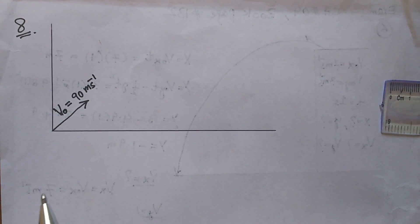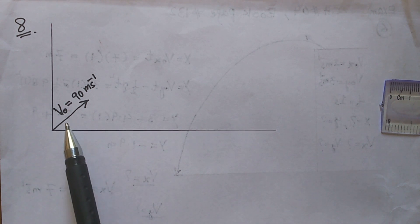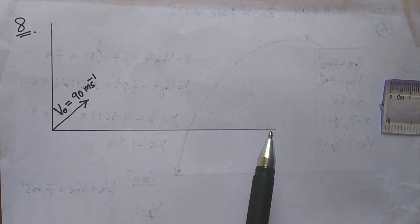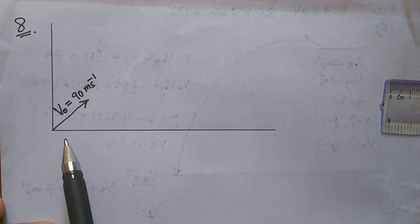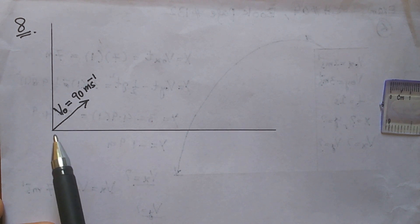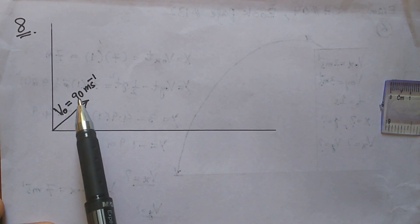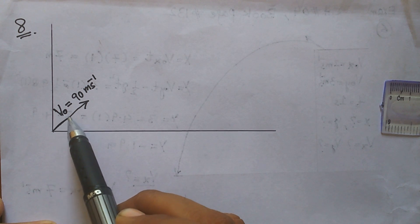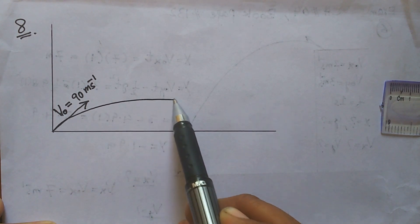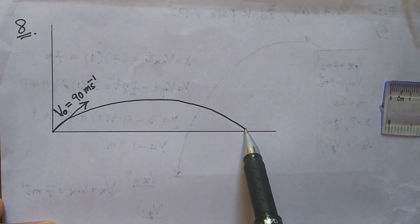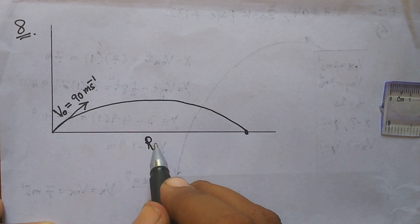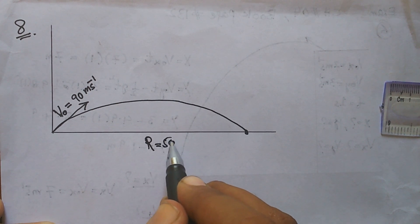In numerical number 8, a mortar shell has been fired from ground level with an initial velocity of 90 meters per second. The shell hits a target at a range of 500 meters. We need to find the launch angle.